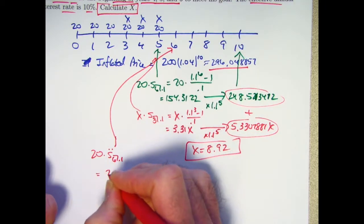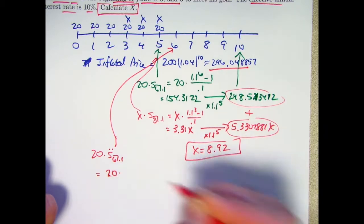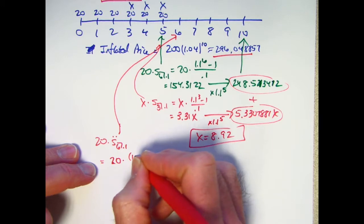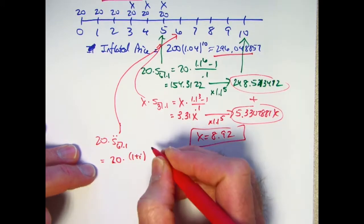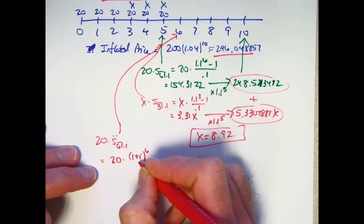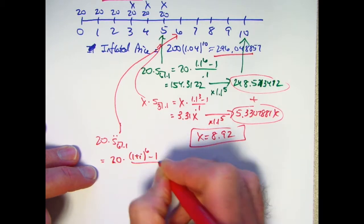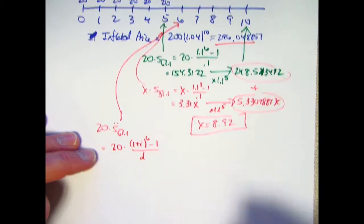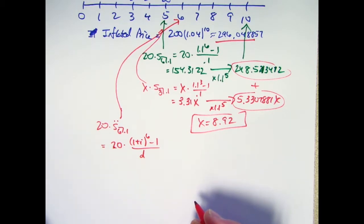S6 double dot would be the future value of an annuity due one year after the last payment. So in this case, at time 6. The formula for that is similar to the formula for annuity immediate. You still take 1 plus i to the n power, which is 6 power in this case, and this is going to be 1.1. Subtract 1, but you divide by something different. You don't divide by i, you divide by d, where d is the discount rate.